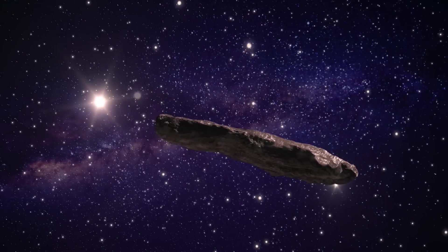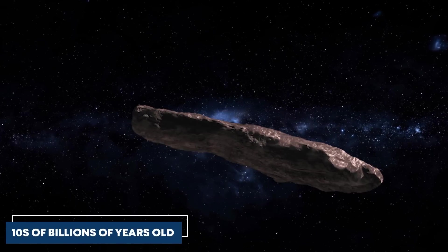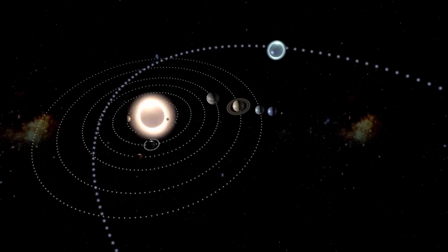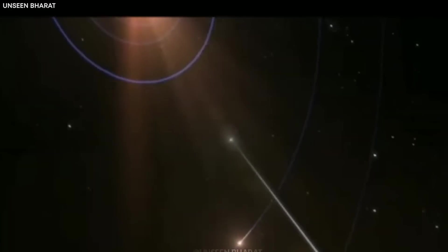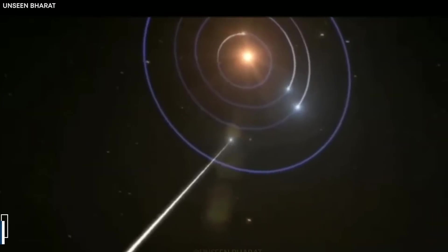Interestingly, Oumuamua means scout or messenger in Hawaiian, and it lived up to its title. Estimated to be tens of billions of years old, this strange visitor had arrived from outside our solar system, zipping through at an incredible speed of 196,000 miles per hour.